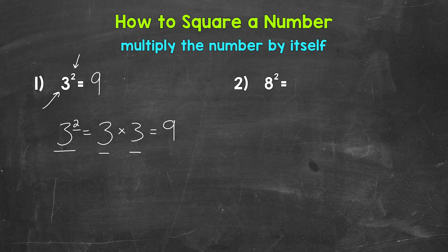3 squared equals 9. And it's as simple as that. Now a common mistake would be to do 3 times 2. Don't multiply the base by the exponent. That would give us 6, which is incorrect. Remember, expand the base out however many times the exponent tells you.